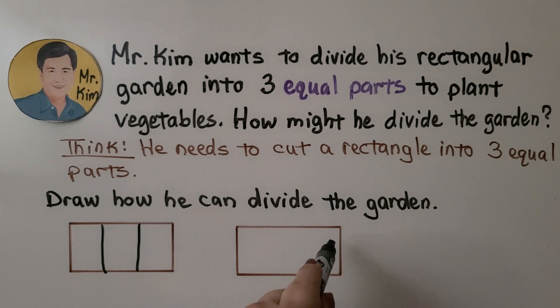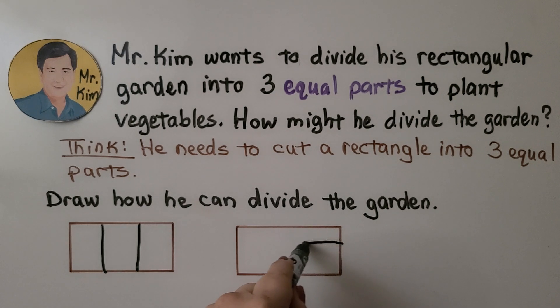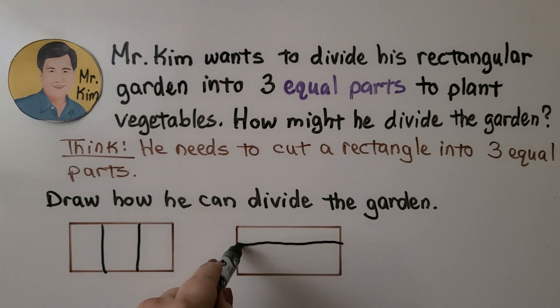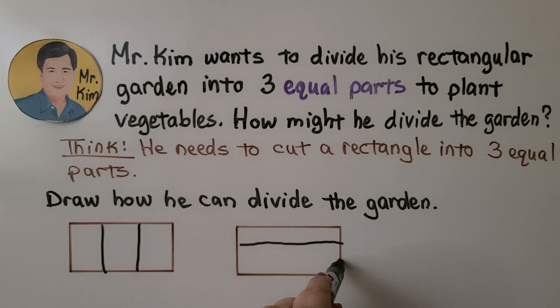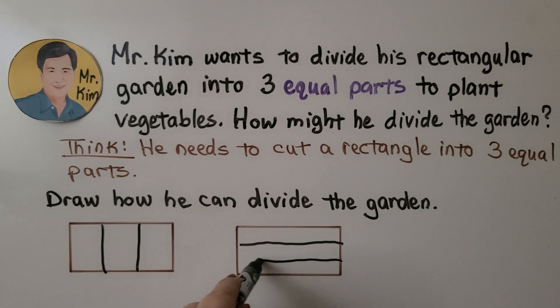He could also split the rectangle the other way and still have three equal parts.